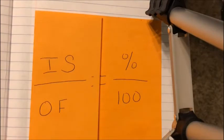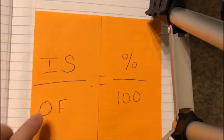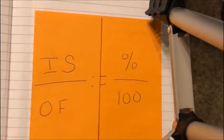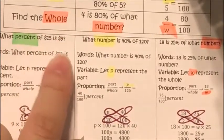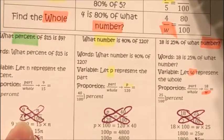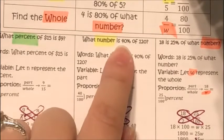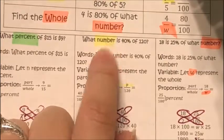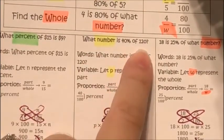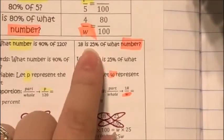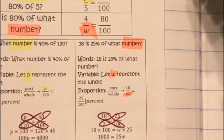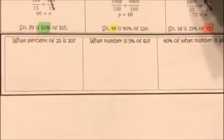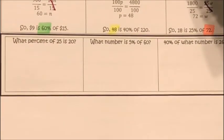If you have problems identifying the part and the whole, use the 'is/of' method. The number that follows 'is' is your part, and the number that follows 'of' is your whole. In all three examples: 'of fifteen' — fifteen is the whole; 'is nine' — nine is the part. 'Of a hundred and twenty' is the whole; 'is' identifies the part. There are three try-it problems below — pause the video, try them, then we'll go over the answers together.